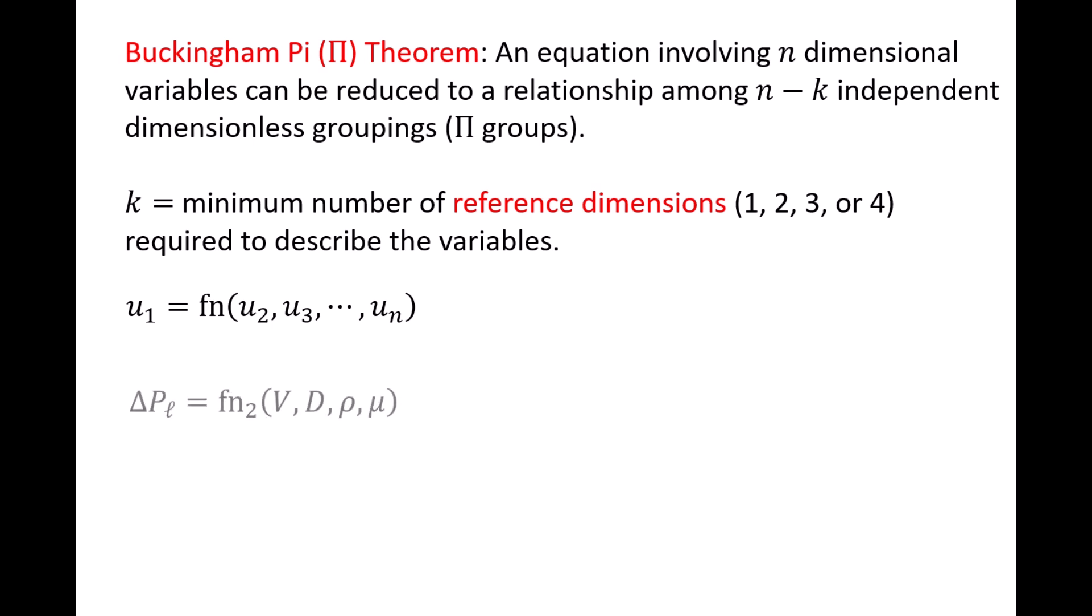Going back to the pipe scenario, we have five variables with dimensions, with the dependent variable being delta PL and the independent variables being V, D, rho, and mu.